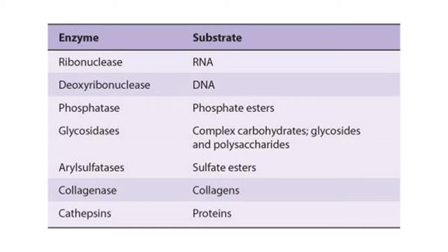A few of those enzymes and their substrates are listed here. For example, the ribonuclease enzyme helps break down RNA, and deoxyribonuclease helps break down DNA. Phosphatase helps break down phosphate esters, glycosidase helps break down complex carbohydrates, aryl sulfatase helps break down sulfate esters, collagenase helps break down collagens, and cathepsins help break down proteins. There are many more such enzymes that help break down complex particles into micronutrients that can help the body re-utilize the nutrients.